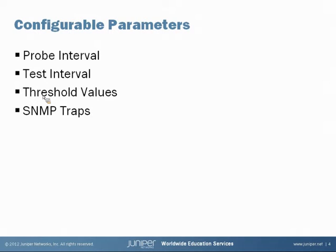The generic things you'll be configuring are the probe interval, test interval, threshold values, and optionally any SNMP traps. Each probe target is monitored over the course of what's called a test. Like most things in Junos, you'll give your test a name and also your probe a name. The test itself represents a collection of probes sent out at regular intervals. Statistics returned for each test include deviation and jitter, included with the average probe statistics for the test.